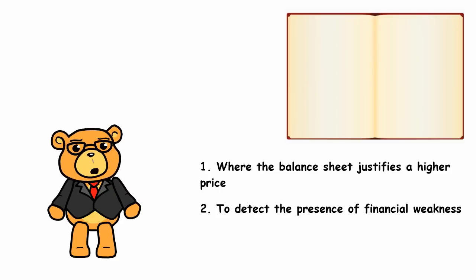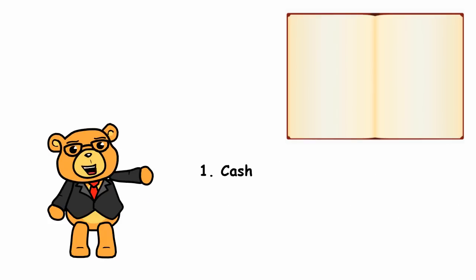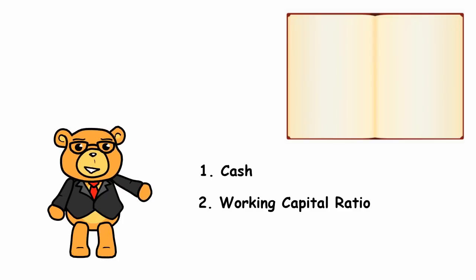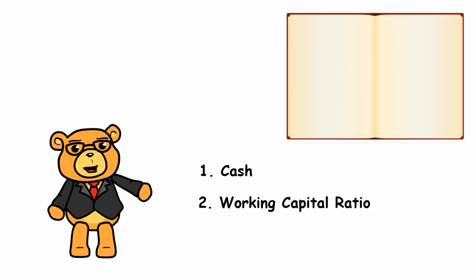Graham focused on three factors to monitor weakness in the balance sheet. One, cash — is the cash level adequate? Two, the working capital ratio, equal to current assets divided by current liabilities. Graham accepts the prevailing standard that the working capital ratio should be greater than two. He also advocates looking at the acid test, otherwise known as the quick ratio — current assets less inventories divided by current liabilities — which Graham suggested should be greater than one.